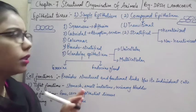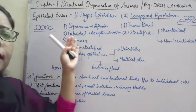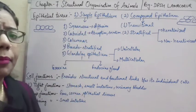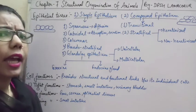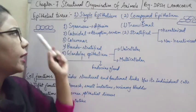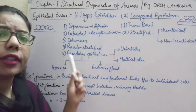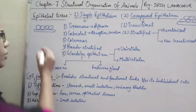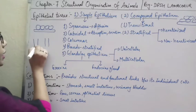Squamous epithelium has cells with a square or tile-like structure and is a very thin layer of cells. Cuboidal epithelial tissue has cube-like shaped cells. Columnar epithelium has column-like cells.